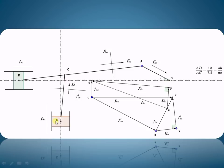The radial acceleration of D with respect to C is directed towards C since C is the center, and the tangential acceleration will be perpendicular to the link, so it is perpendicular to the radial acceleration. The acceleration of a slider is parallel to its path of sliding, so acceleration of B with respect to the fixed point O is parallel to its path of sliding. Similarly, acceleration of D with respect to O is also parallel to its path of sliding.